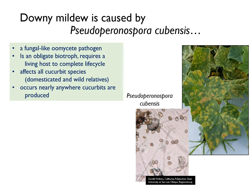Downy mildew is caused by Pseudoperonospora cubensis, or P. cubensis for short. Although you may hear me reference P. cubensis as a fungus, it is actually not a true fungus, rather an oomycete. Oomycetes are a unique group of organisms that are more closely related to brown algae than true fungi and are often referred to as water molds.